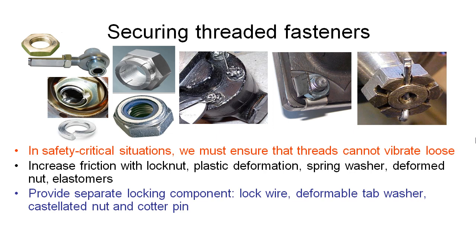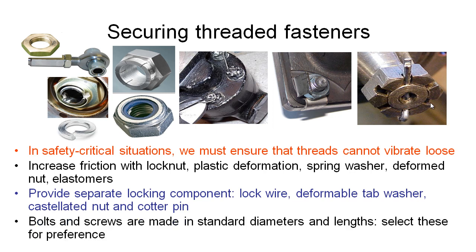The final locking option here is a castellated nut and cotter pin. We cut slots across the nut and put a matching hole in the shaft. We tighten the nut to the required position, and when it aligns with one of the holes — sometimes there are multiple holes for fine adjustment of tension — we put a pin through and fold over the legs so the nut can't come undone until the pin is removed. You would commonly see this on car axles, where it's used to hold wheel bearings in place.